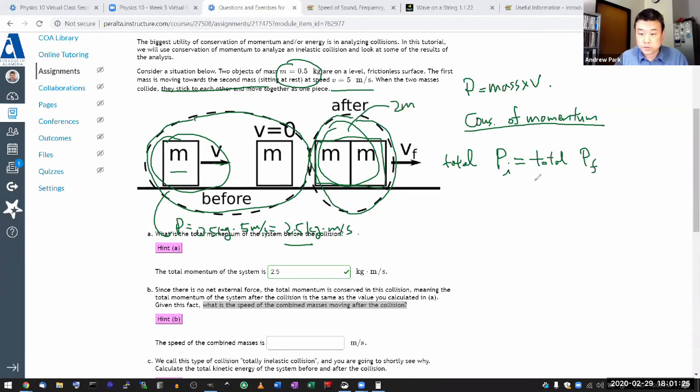And according to this conservation of momentum, what I do know is 2m times this final speed is equal to this initial momentum, which is same as the final momentum, 2.5 kilogram times meter per second. And 2m, just so that I'm doing this easier, m is 0.5 kilogram. So 2m is 1 kilogram. So kilograms cancel out. 1 is 1.